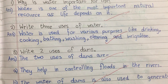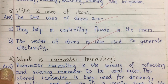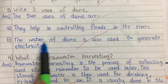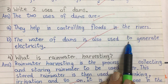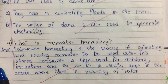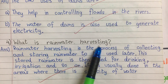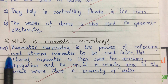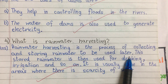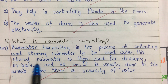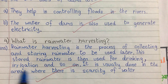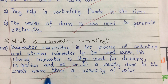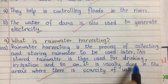Number 3: write two uses of dams. The two uses of dams are: they help in controlling floods in the rivers, and the water of dams is also used to generate electricity. Number 4: what is rainwater harvesting? Rainwater harvesting is the process of collecting and storing rainwater to be used later. The stored rainwater is then used for drinking, irrigation and so on. It is usually done in areas where there is scarcity of water.